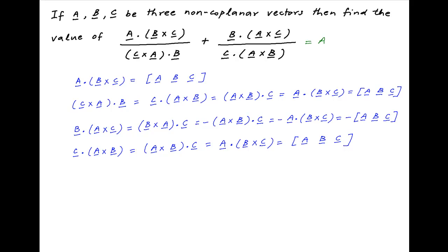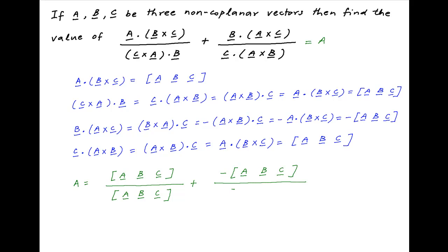Substituting the above results in the given expression, we get the scalar triple product [ABC] divided by the scalar triple product [ABC], plus the second term which is minus the scalar triple product [ABC] divided by the scalar triple product [ABC]. This simplifies to 1 minus 1, which is equal to 0, which is the required answer.